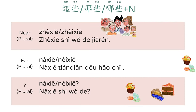When using the plural form of demonstrative pronouns: 这些 means 'these,' 那些 means 'those,' and 哪些 means 'which ones.' The sentence pattern is the same as for singular demonstrative pronouns. 这些是我的家人。 These are members of my family. 那些甜点都好吃。 Those desserts are all delicious.